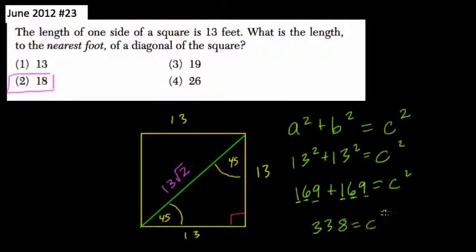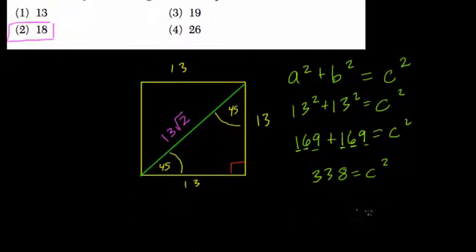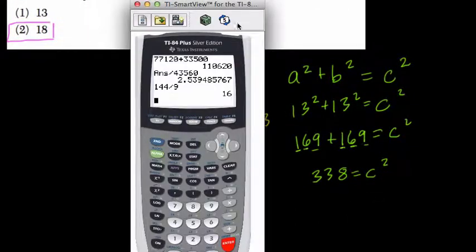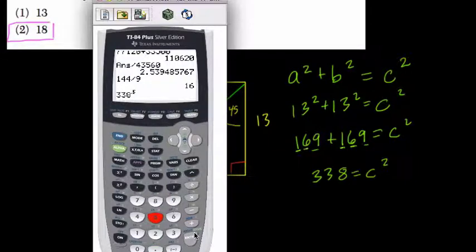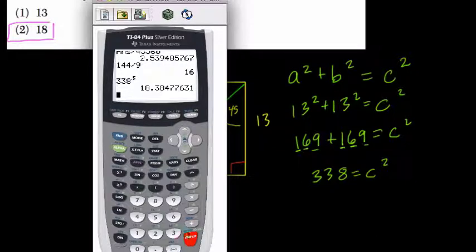And that equals c². But we want to know not what c² is, but the length of c. So on our graphing calculator here, just to speed this up a little bit, we take the square root of 338. And here I do 338 raised to the 0.5 power, which is the same thing as square root, and we get 18.38477. So you can see it's pretty close to 18.